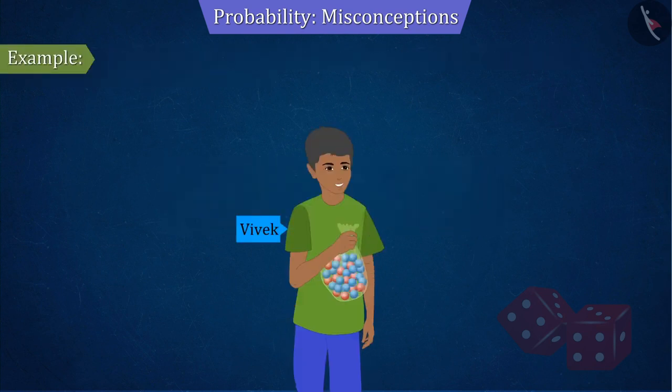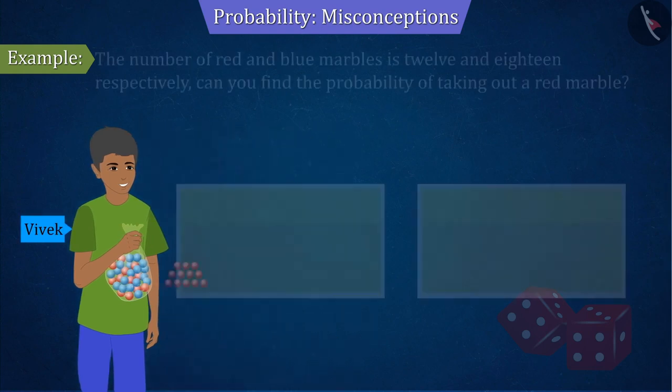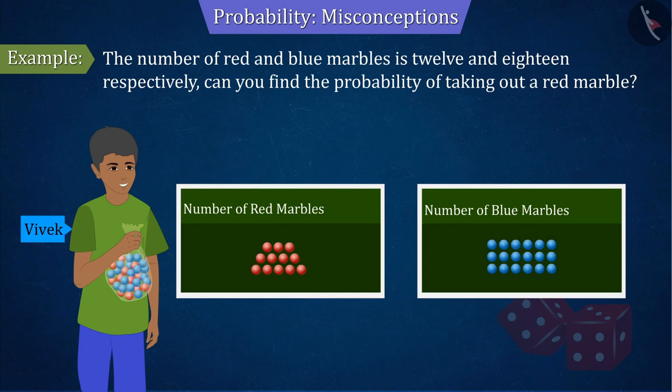Vivek has a bag containing only red and blue marbles. If the number of red and blue marbles is 12 and 18 respectively, can you find the probability of taking out a red marble?